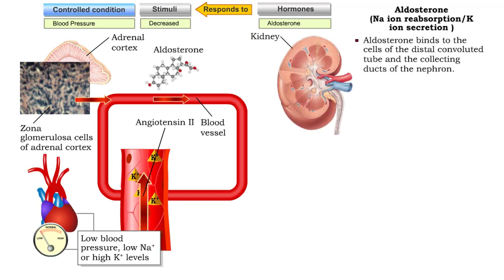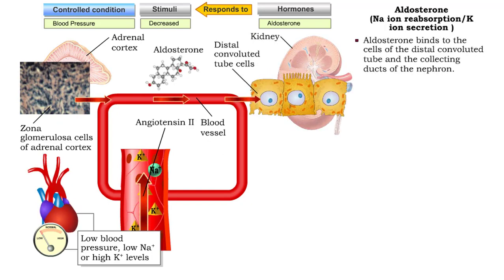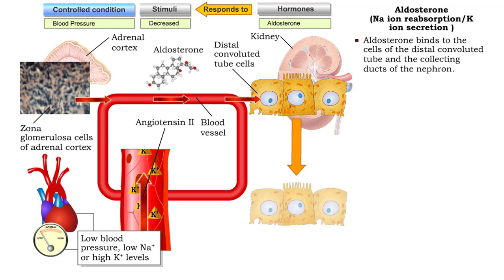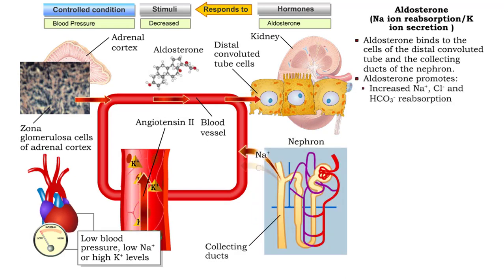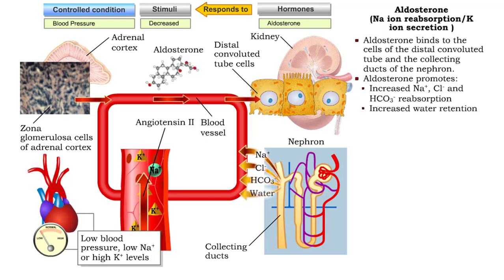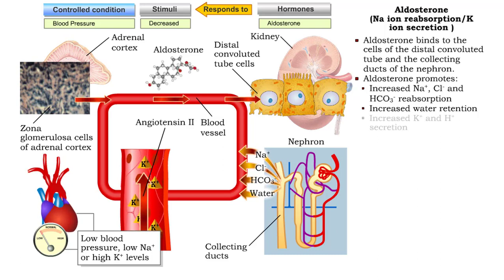Aldosterone binds to the principal cells of the collecting ducts of the nephron, where it promotes increased sodium, chlorine, and hydrogen carbonate reabsorption from urine, increased water retention and reabsorption back into the bloodstream, and increased potassium and hydrogen secretion.